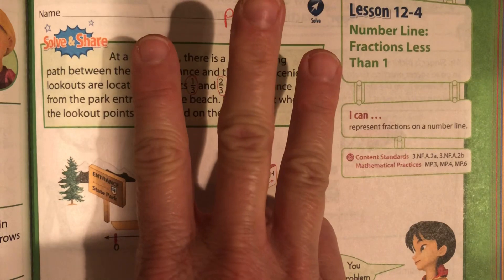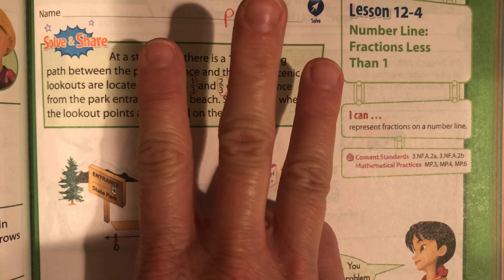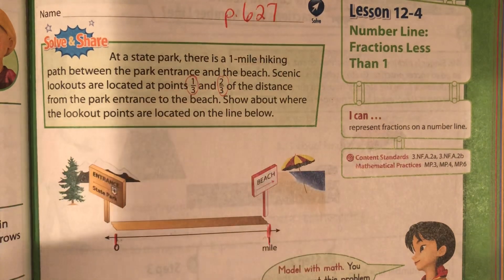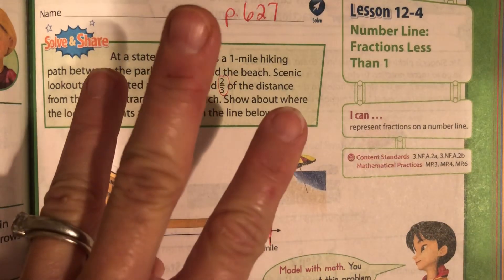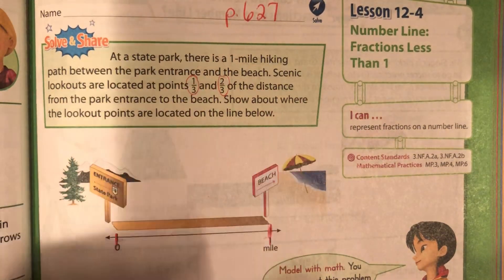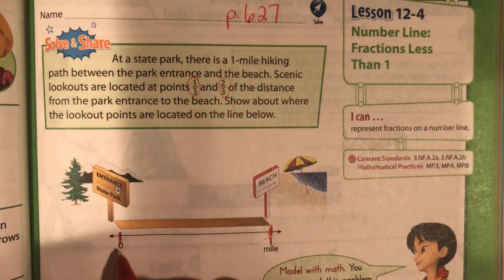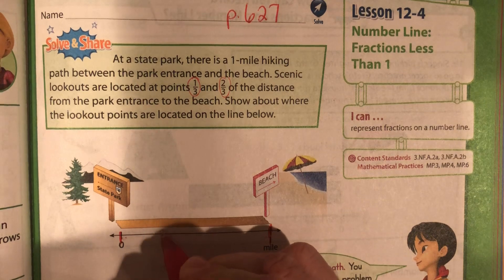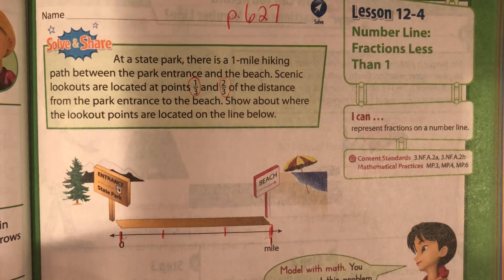Show me 3 fingers, and now tuck one of them away. How many lines are you going to draw? 2. So, 3 parts, 2 lines — that's 2 lines you're going to draw. So we're going to draw a line here and a line here.